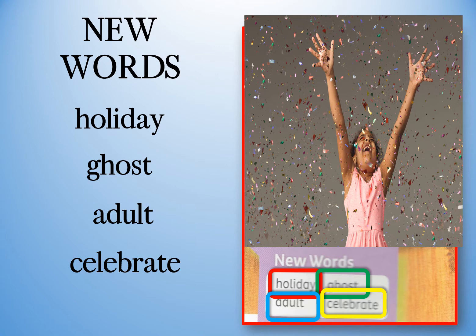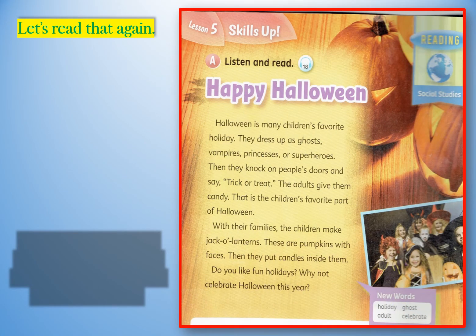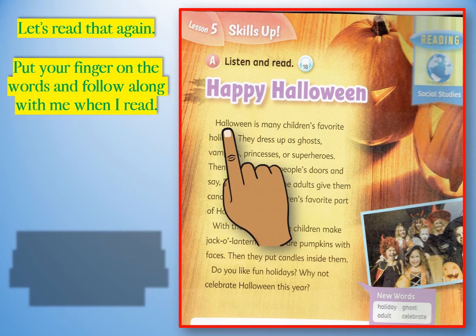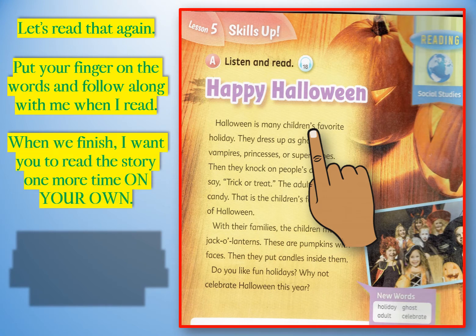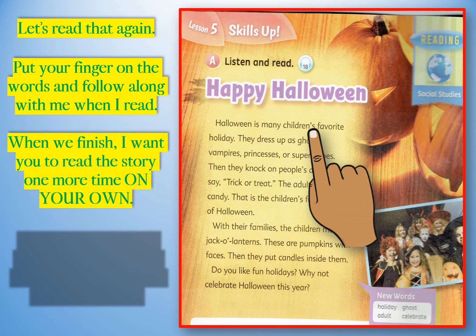We're going to read the story one more time. This time I want you to read it from your student book. Put your finger on the word and follow along with me when I read. When we finish, I want you to read the story one more time on your own — you can use your finger to help you with the words. I'm going to read it now. Open your book, put your finger on the first word. Are you ready? Here we go.